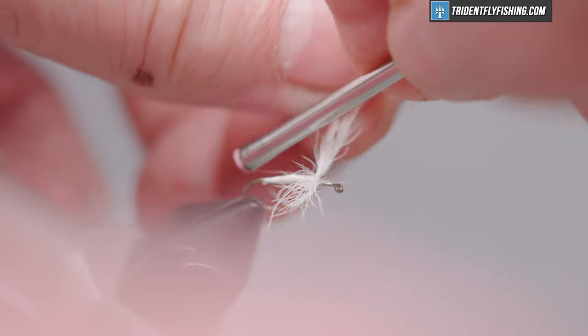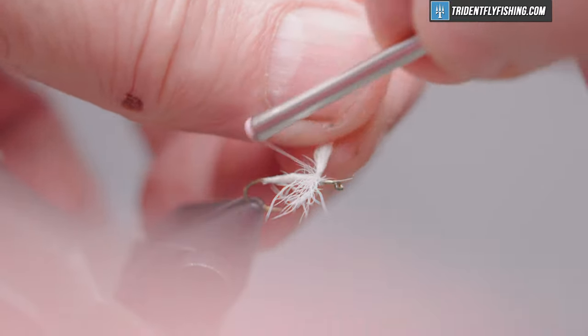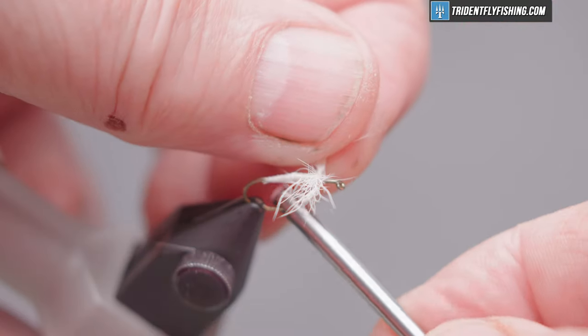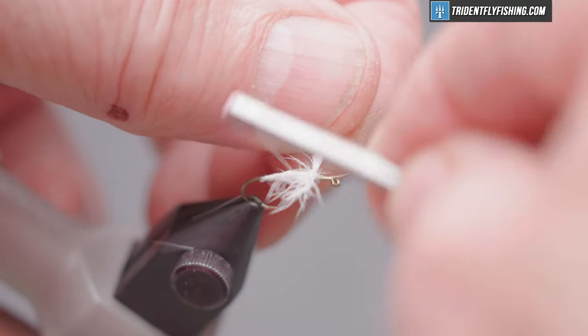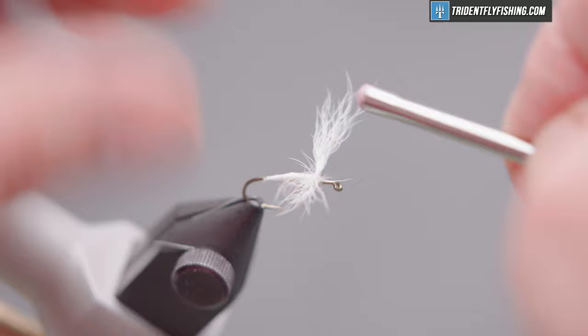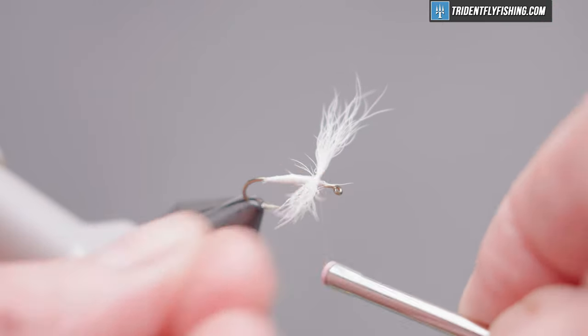And now just a couple of posting turns. Pull the wing back. Take a locking wrap around the body. And do the same thing for the other wing.